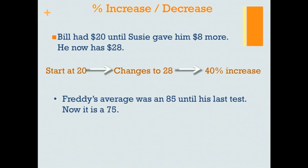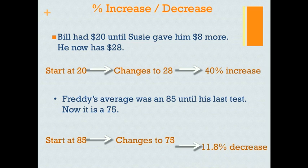In our second example, Freddie's average was 85 until his last test. Now it is a 75. So Freddie starts at 85, it now changes to 75, giving us an 11.8% decrease.